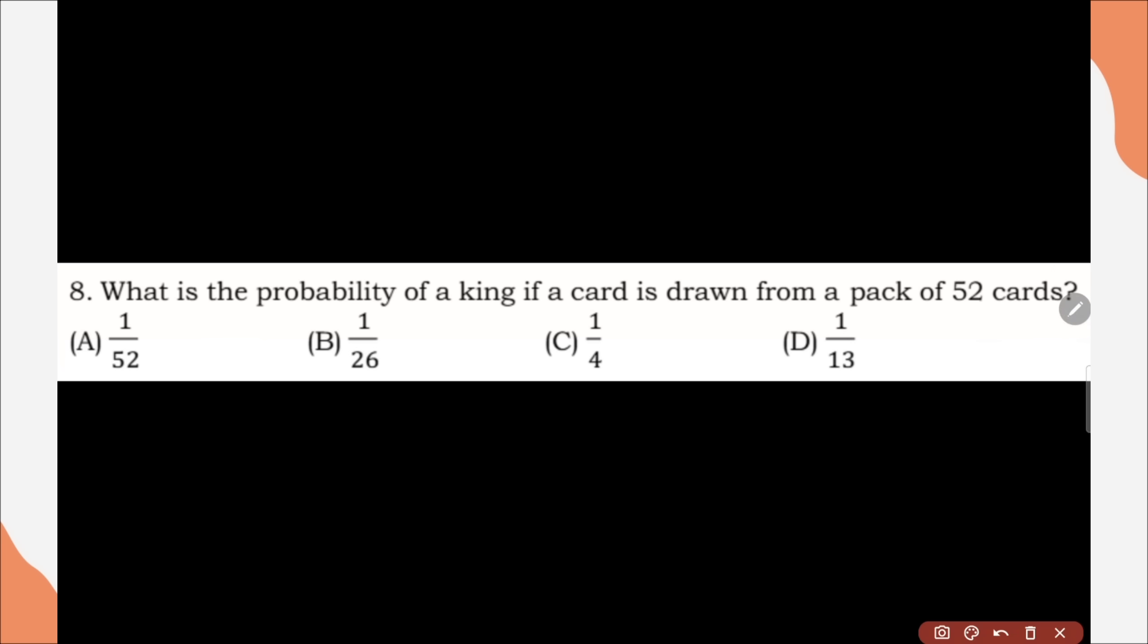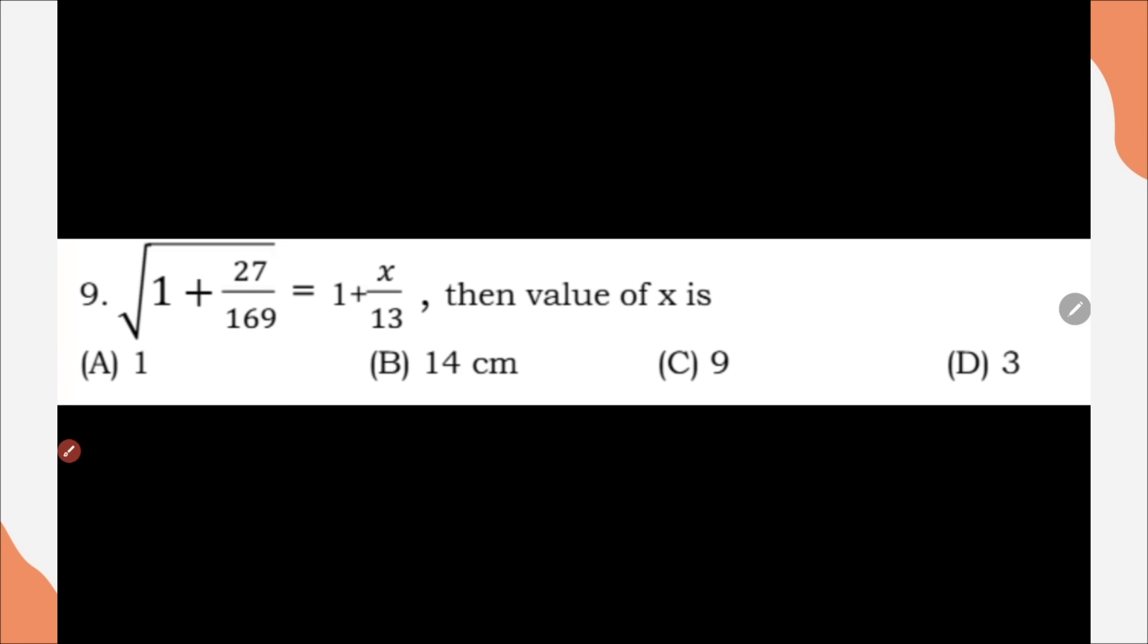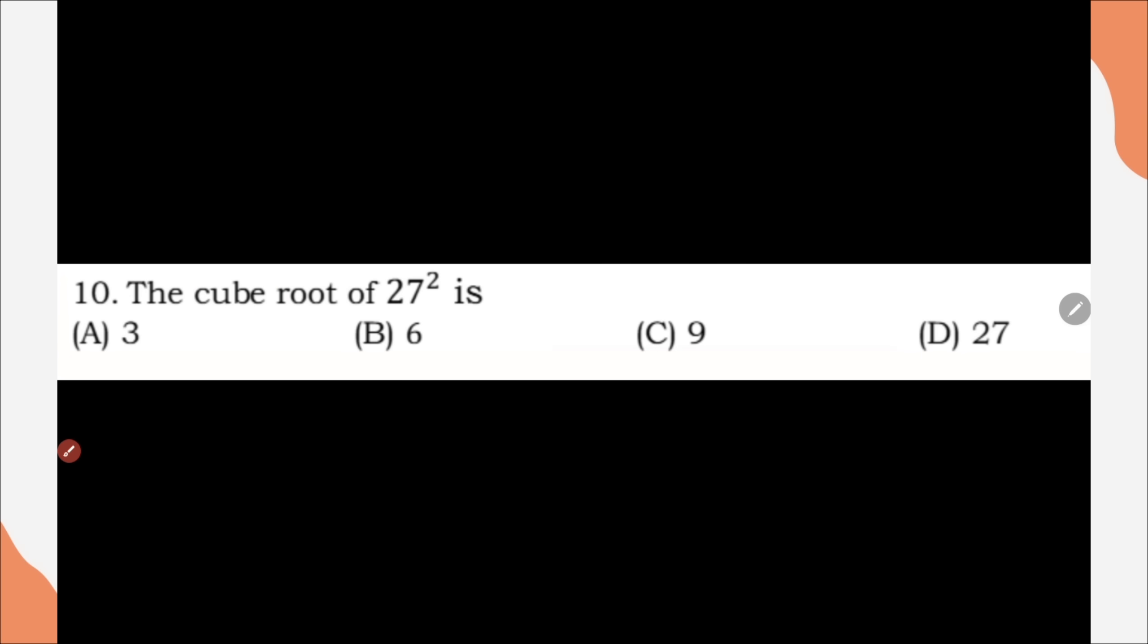Question 8, what is the probability of a king if card is drawn from pack of 52 card? Correct option is option D, 1 by 13. Question number 9, find the value of x, correct option is option A, 1. Question number 10, the cube root of 27 to the power 2, correct option is option C, 9.